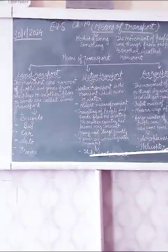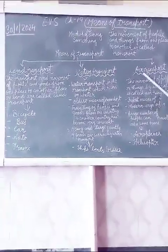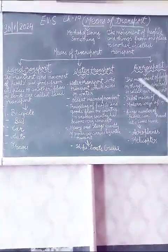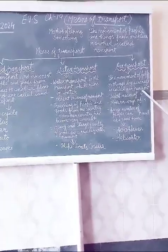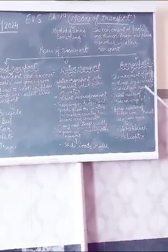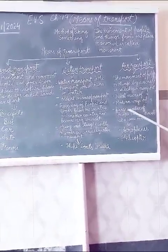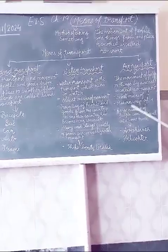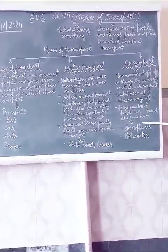Examples of water transport are ships, boats, and cruises. Air transport: the movement of people or things by aircraft is called air transport. It is the fastest means of transport and the modern way of transport. A lot of people can travel at the same time. Examples of air transport are aeroplane and helicopter.